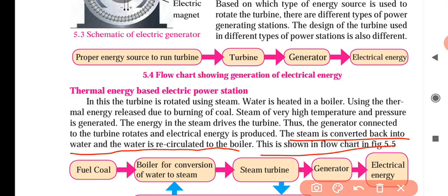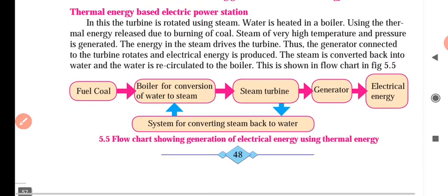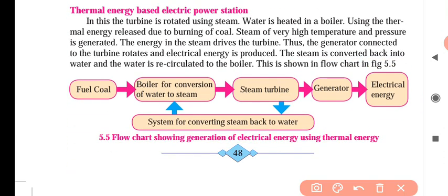In the flow chart, the fuel coal is burned. The coal heats a boiler for conversion of water to steam. The steam is then pressurized to the turbines.